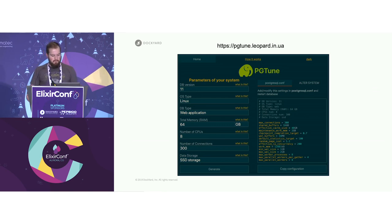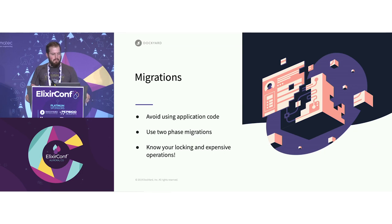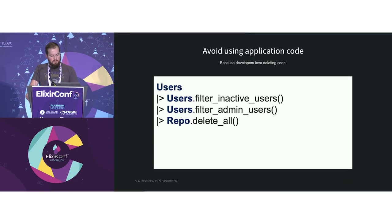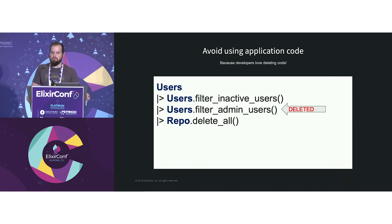For migrations: avoid using application code in migrations, predominantly because you won't notice when you delete application code that breaks a migration since you've already run it locally. Two-phase migrations are one of the bigger tips that a lot of people don't follow. Also know what operations are locking or expensive. Don't use application code in your migrations as best you can — somebody's going to delete it. I've seen that all the time. And you don't notice until you've shipped it and somebody can't use it.